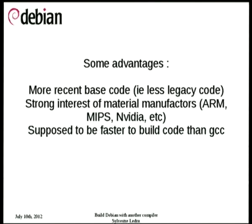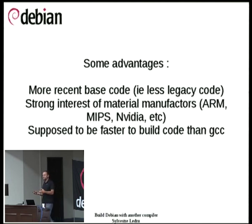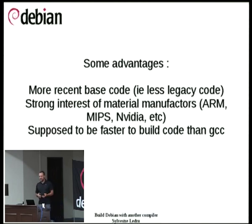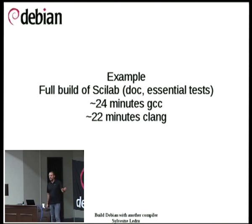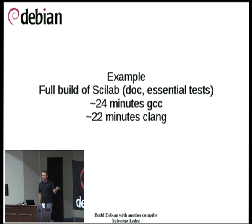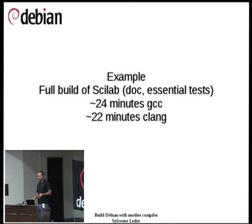It has some advantages. The base code is more recent — it is easier to work with code written now than code written 30 years ago. There is strong interest from manufacturers because the code is easy to hack and easy to provide new backends. It is supposed to be faster to build code than GCC. For example, in my daily job I work for Scilab, a free numerical computing software. Jenkins shows GCC builds take 24 minutes; Clang takes 20 minutes, so we save time. That 24-minute figure includes building documentation and running tests, not only C or C++.